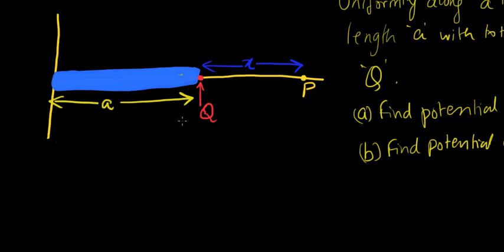Suppose there's a point right here and it has a charge total of Q. If there was a point charge Q out here and you were asked to find the potential at P due to Q, how would you do it?